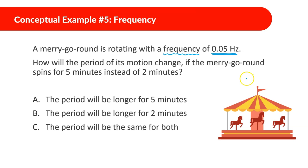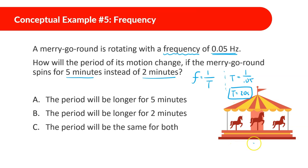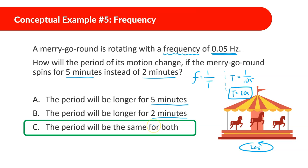A merry-go-round rotates with a frequency of 0.05 hertz. How will the period of its motion change if it spins for five minutes instead of two minutes? Period equals 1 divided by 0.05, which equals 20 seconds. Even though it completes more rotations in five minutes than in two minutes, the period — how long it takes to make one full circle — remains 20 seconds in both cases. The period will be the same for both.